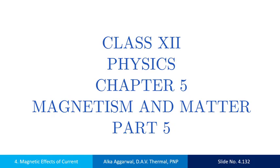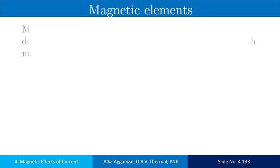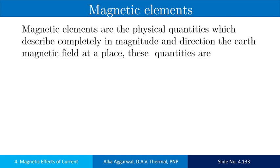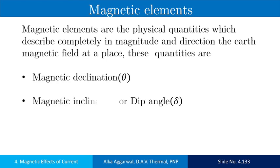In this lecture, we will study about the magnetic elements. Magnetic elements are the physical quantities which describe completely in magnitude and direction the earth's magnetic field at a place. These quantities are magnetic declination, magnetic inclination which is also known as dip angle, and the horizontal component.